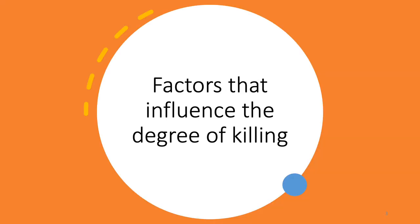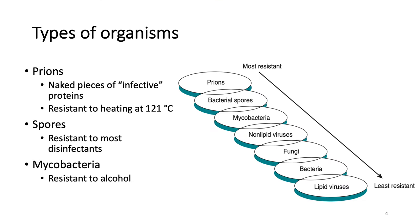There are many factors that influence an agent's degree of killing. The first is the type of organism being killed. The figure on the right shows the different types of organisms and their degree of resistance. Prions, which are infective pieces of proteins, are the most resistant, even being able to resist heating at 121 degrees Celsius, which is the regular autoclave temperature. Then you have bacterial spores, which are resistant to most disinfectants, and mycobacteria, which are resistant to alcohol.